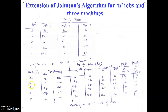Arrange the jobs in the sequence we have found, that is 4, 2, 1, 3, 5. So we have 3 machines: machine 1, machine 2, and machine 3. This is the time-in and time-out in machine 1; let us do that first.